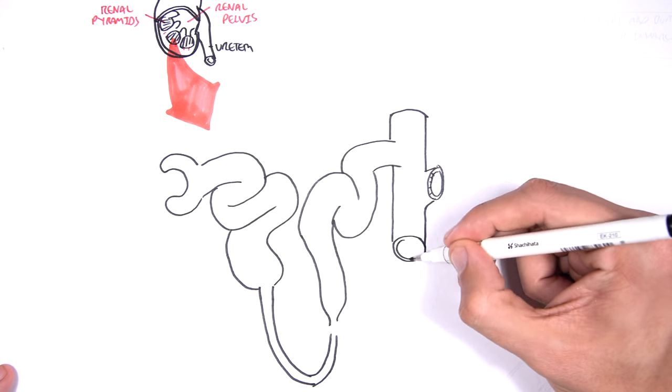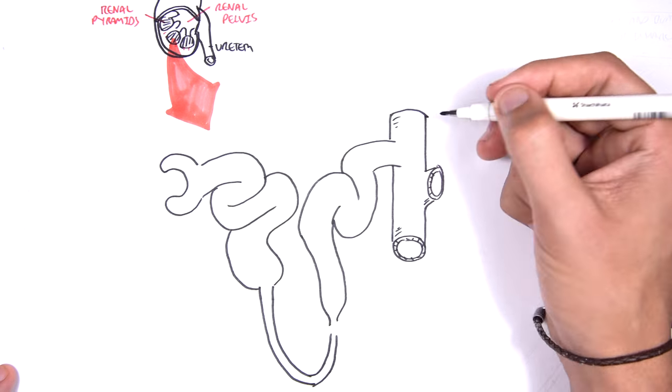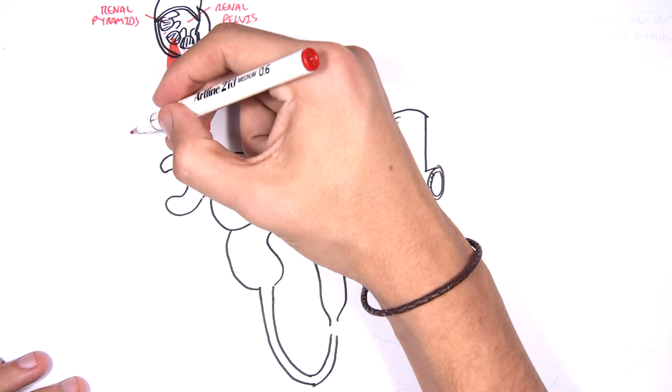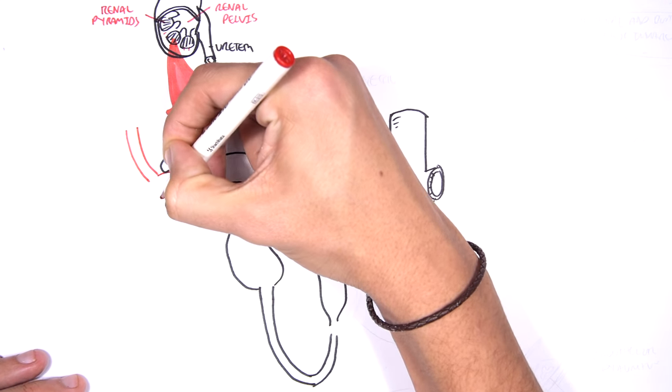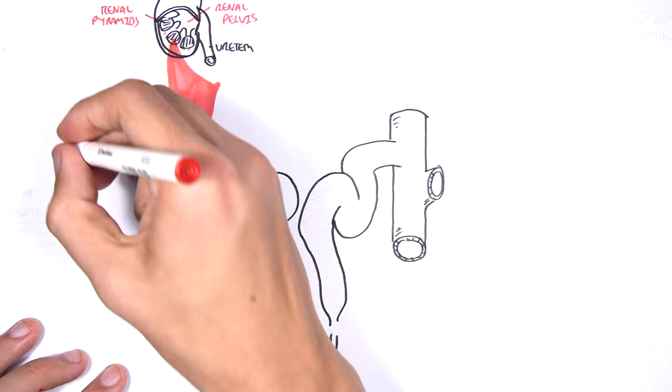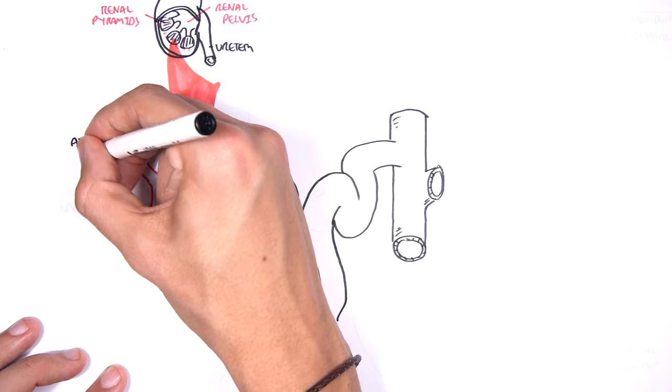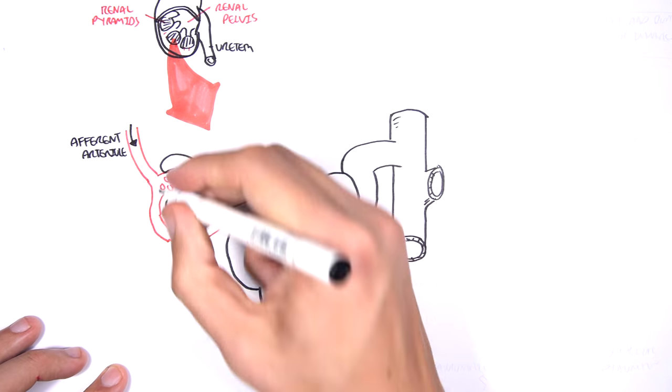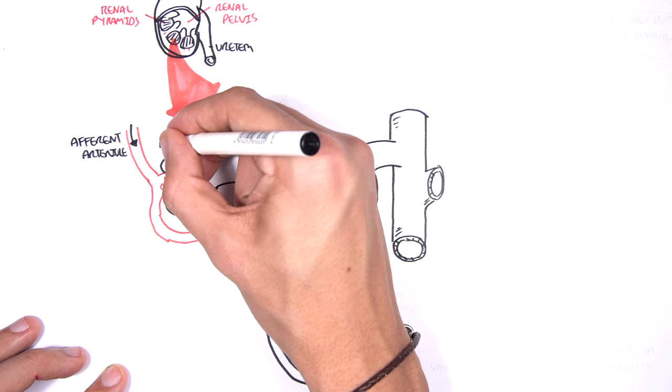So, let us briefly look at the function of the kidneys, of the nephrons. In summary, an afferent arteriole will carry blood from the renal artery. This afferent arteriole will come down, and it will be filtered in the glomerulus.